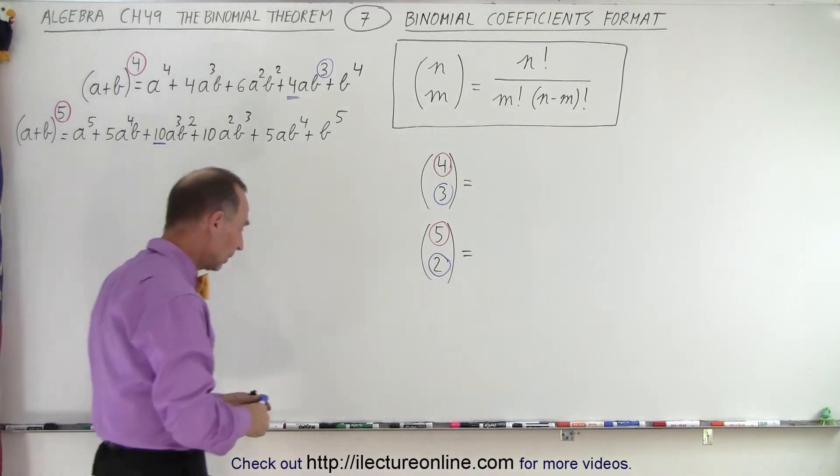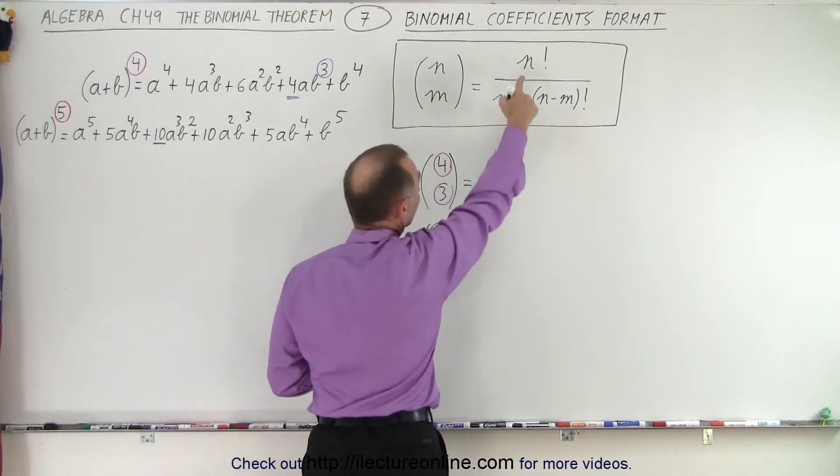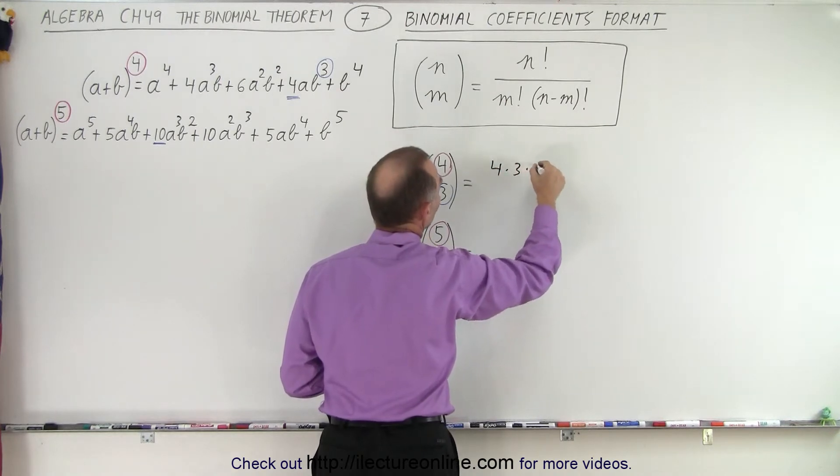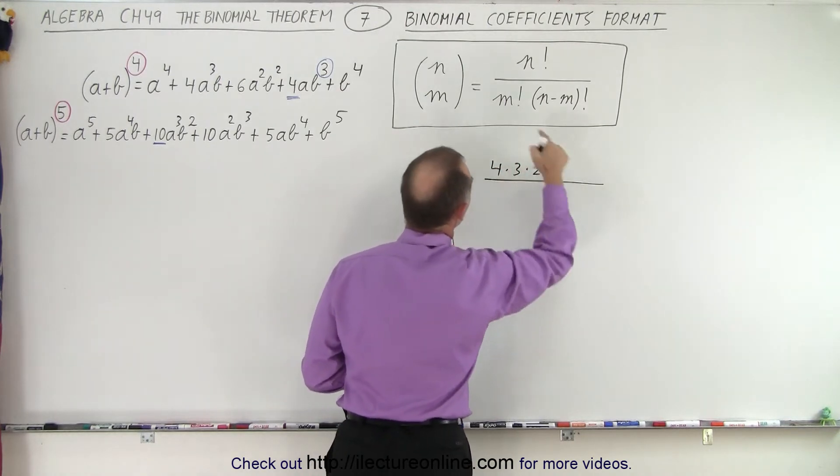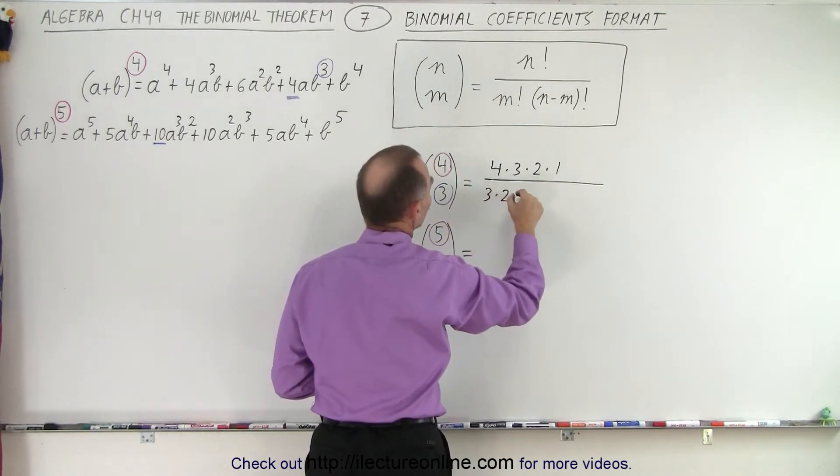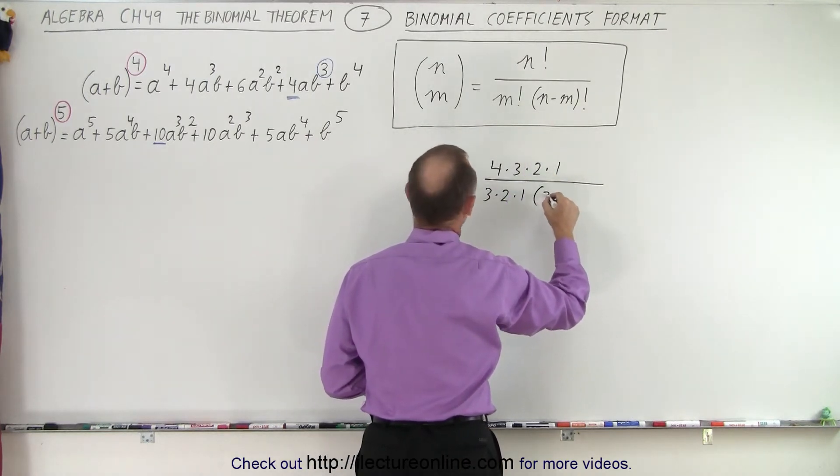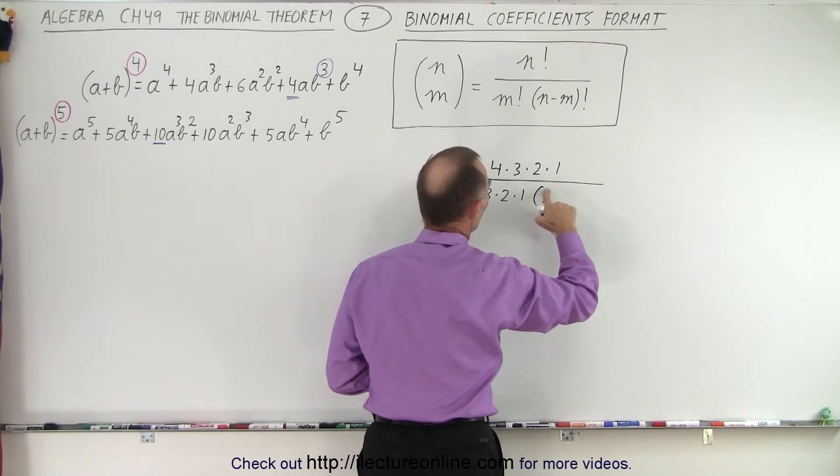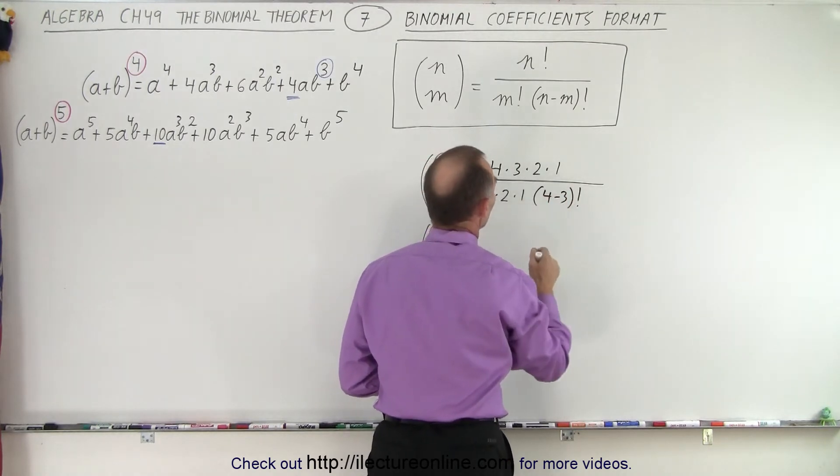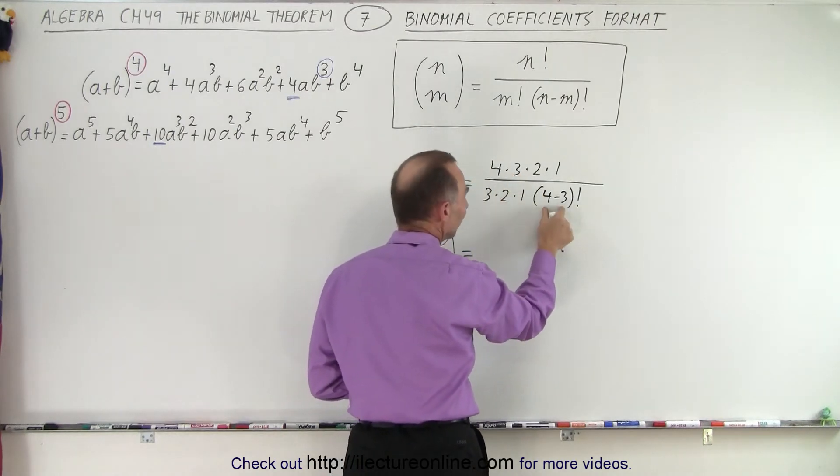Let's work this out. Here we have 4 factorial on top, so that's 4 times 3 times 2 times 1, divided by m factorial, which in this case is 3, times (n minus m) factorial. So this is 4 factorial divided by 3 factorial times (4 minus 3) factorial.